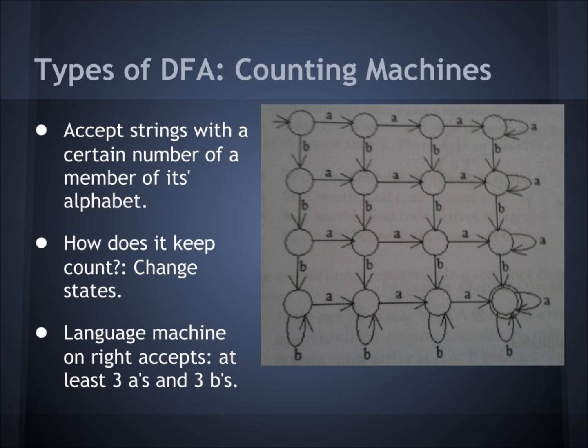Types of deterministic finite state automata. First, we have a counting machine. These accept strings with a certain number of a member of its alphabet. These keep count by changing states. The machine on the right accepts strings with at least three A's and three B's.